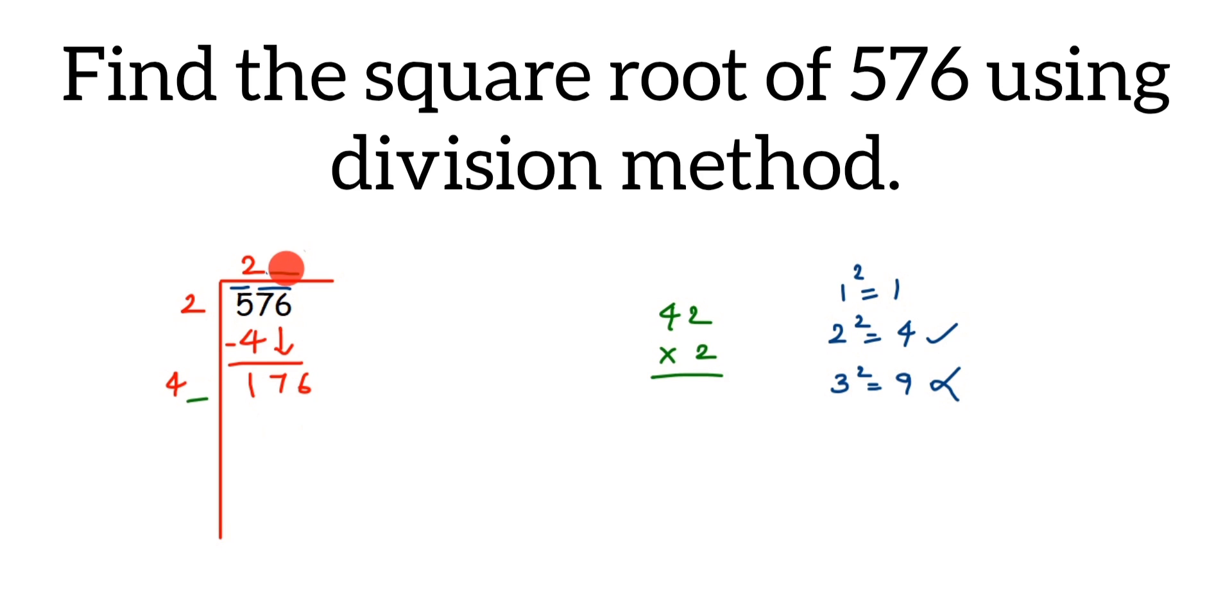We have 6 here at the end. Just think of squares of a number which will give you 6 at the end. 4² will give 16 and 6² will give us 36, so both these numbers give us 6 in the end. This could be either 4 or 6.